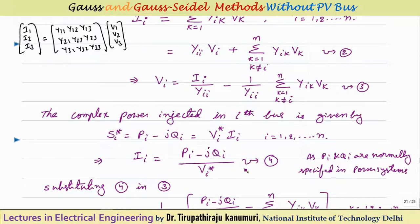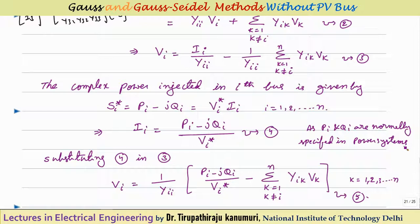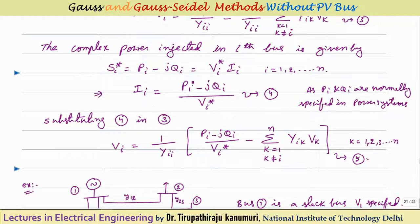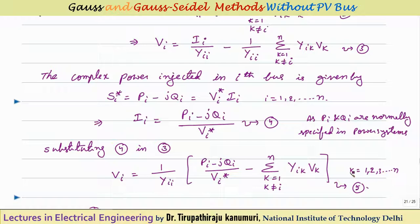Pi and Qi are normally specified in power systems because most buses are load buses — we already know their values. Substituting Ii = (Pi − jQi)/Vi* into the voltage equation gives: Vi = (1/Yii) · [(Pi − jQi)/Vi*] − (1/Yii)·Σ(k=1 to n, k≠i) Yik·Vk. The equation for Vi depends again on Vi itself, which is why we use an iterative method to calculate the voltages at all buses.